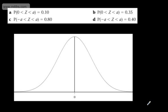In the last video, we looked at finding the value of A given a probability. We did that by using the standard normal tables. In this video, we're going to do something similar, but use the percentage points table.